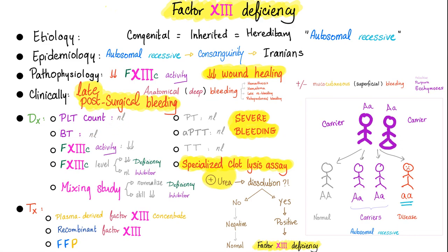Platelet count and bleeding time are normal because primary hemostasis is fine. PT, PTT, and TT are all normal because Factor 13 deficiency occurs after the coagulation cascade. Factor 13 activity will be low if it's a true deficiency; if there's an inhibitor or antibody, the Factor 13 level will be normal. To tell the difference, perform a mixing study.